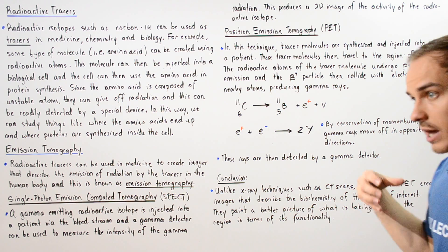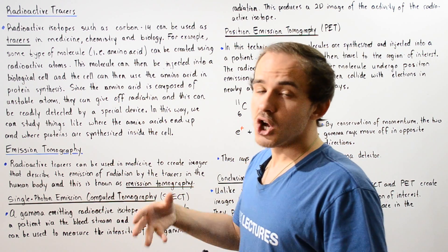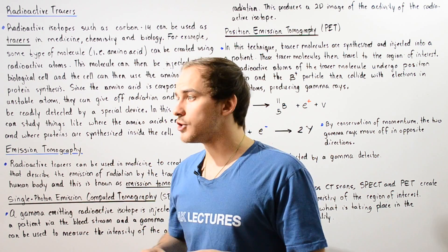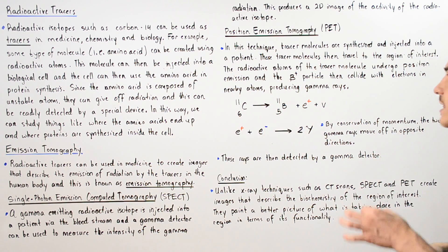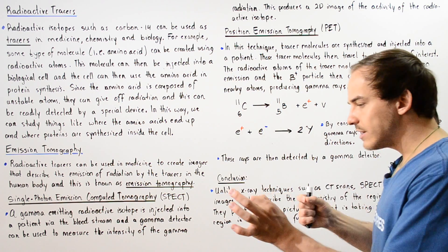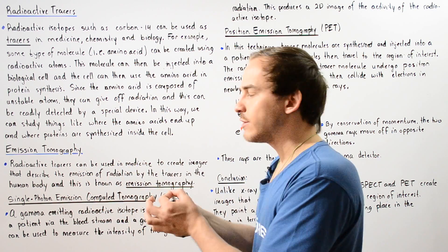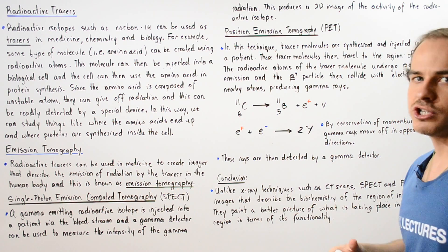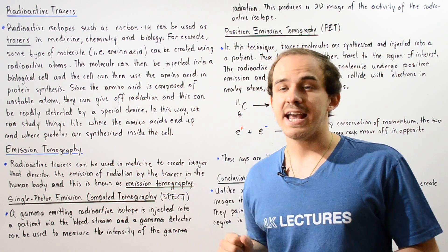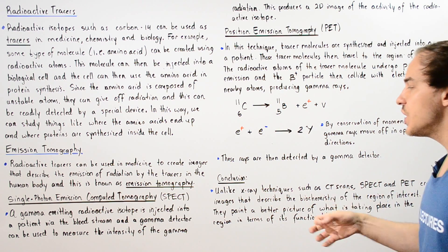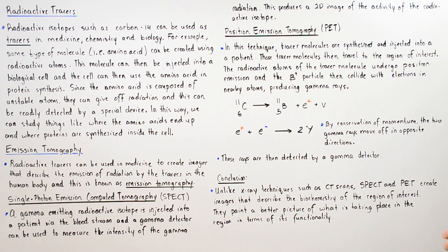That positron particle then collides with an electron in the outer shell of an atom. The positron and electron basically annihilate, releasing gamma radiation in the process. That gamma radiation can be picked up using a gamma reading device.